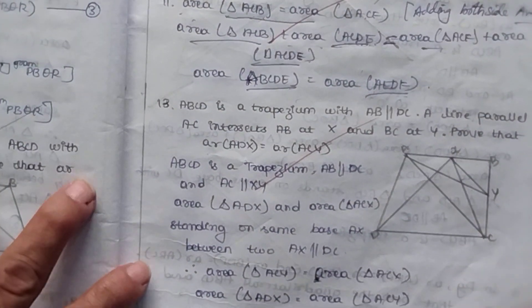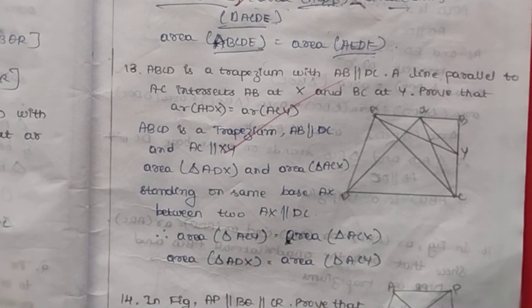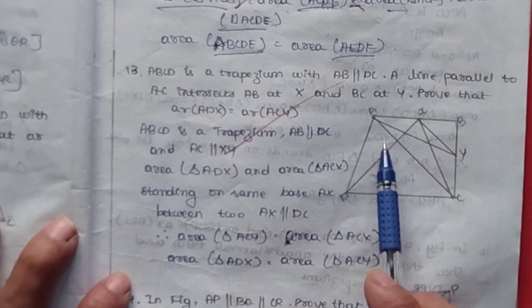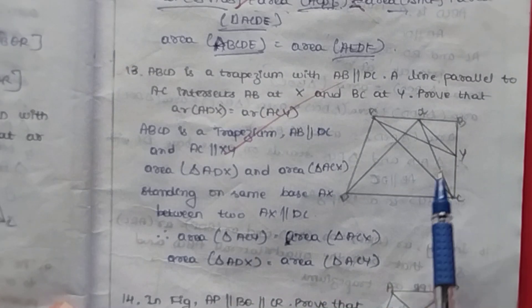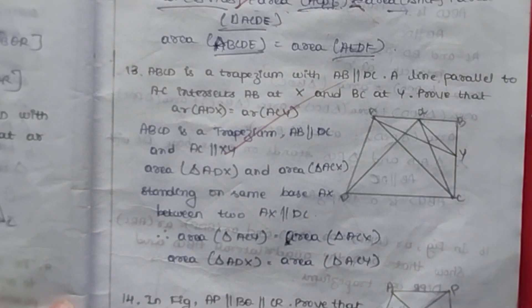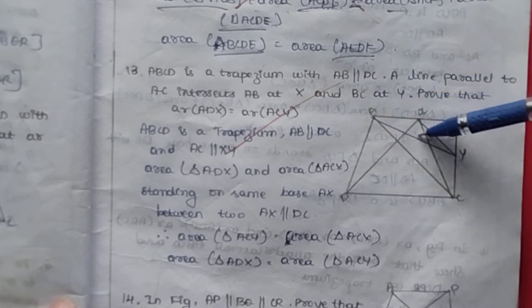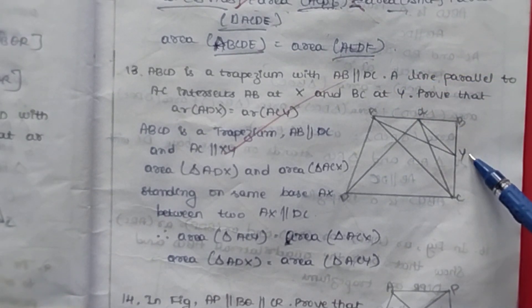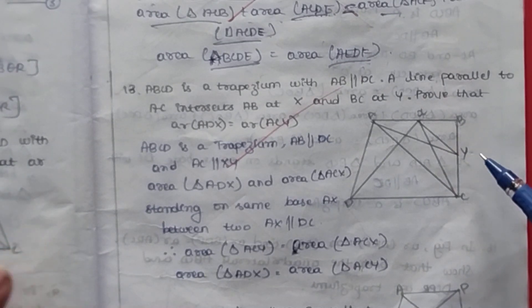Now question number 13. ABCD is a trapezium with AB parallel to DC. A line parallel to AC intersects AB at X and BC at Y. We need to prove that area of triangle ADX is equal to area of triangle ACY.